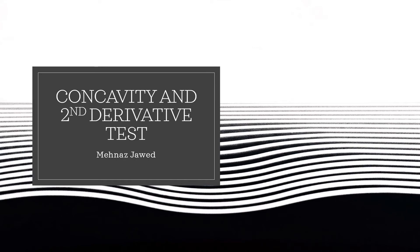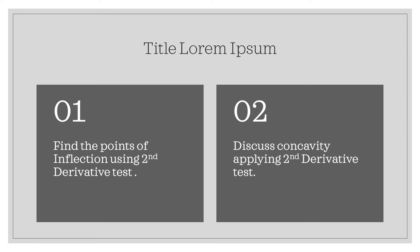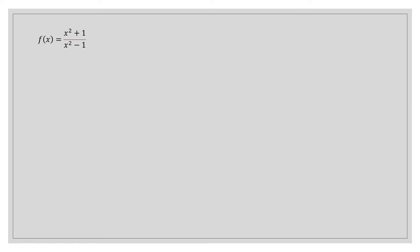Our topic is concavity and second derivative test. Today we will put the light on finding the points of inflection and we will discuss the concavity of the rational function. The question in front of us is x squared plus 1 divided by x squared minus 1, written in the form of a rational function.